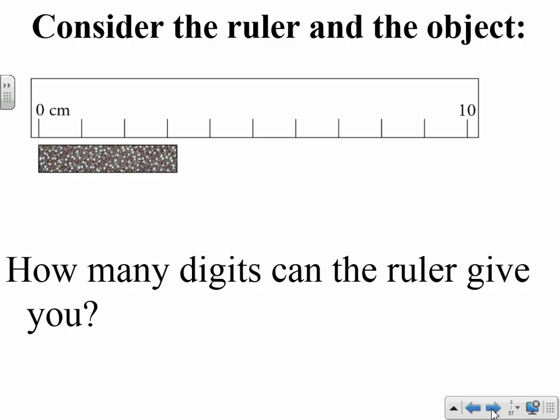So here is an example of a ruler and a bunch of markings. Here is the piece of item that we want to measure. And the question is how many digits can this ruler give you? Hopefully you've used rulers before. So this ruler is a metric ruler which means it uses base 10 for measurements. Every section is divided into 10 smaller sections. So this would be 1, 2, 3, 4, 5, and so on.